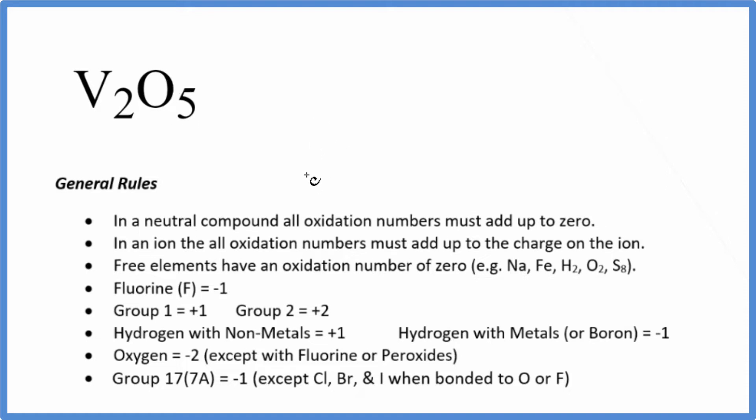To find the oxidation numbers, we know that first there's no negative or positive after this V2O5. So it's a neutral compound. All the oxidation numbers will add up to zero.